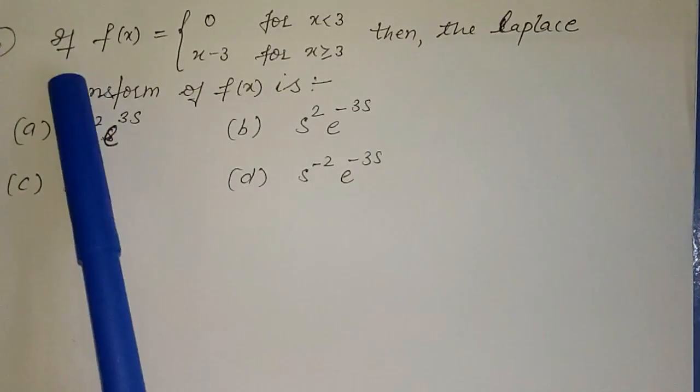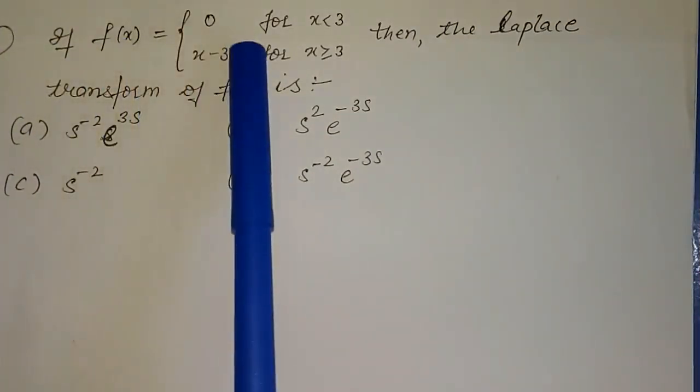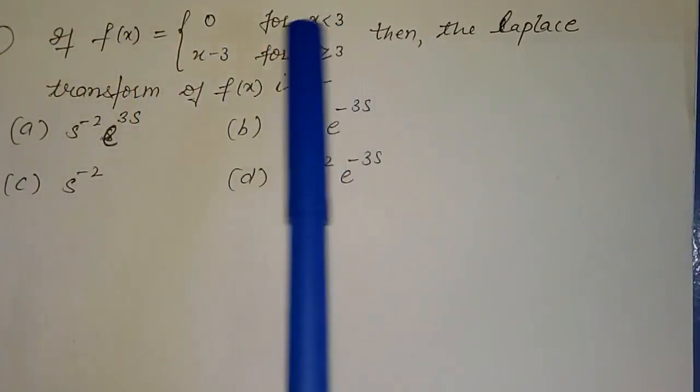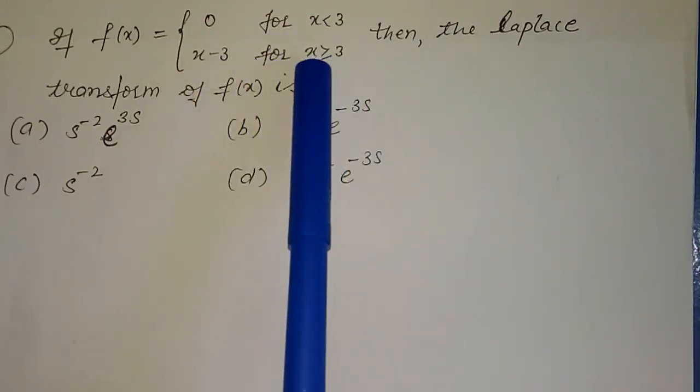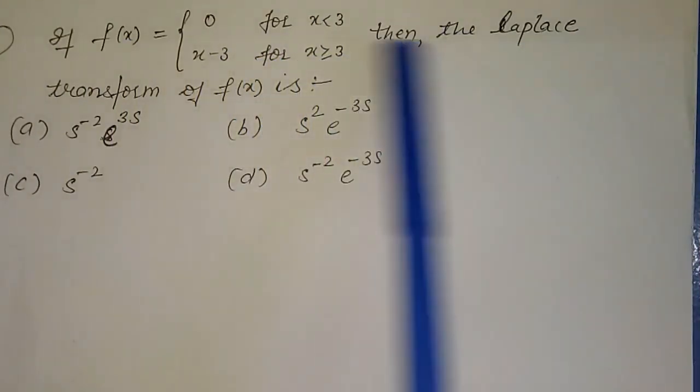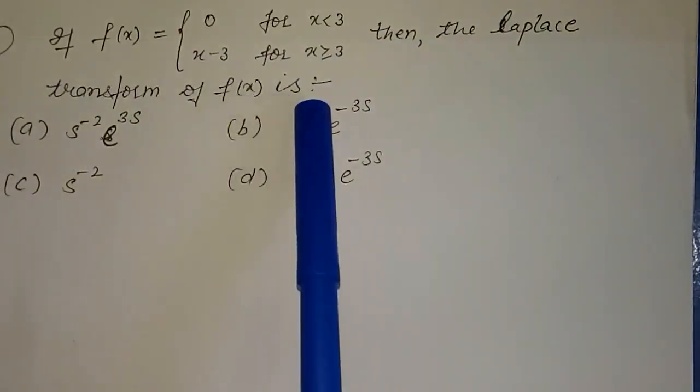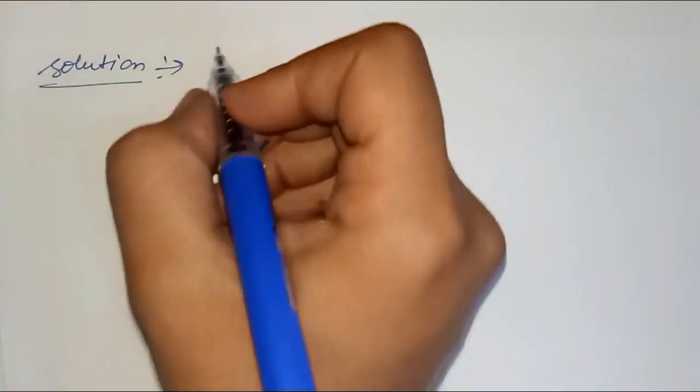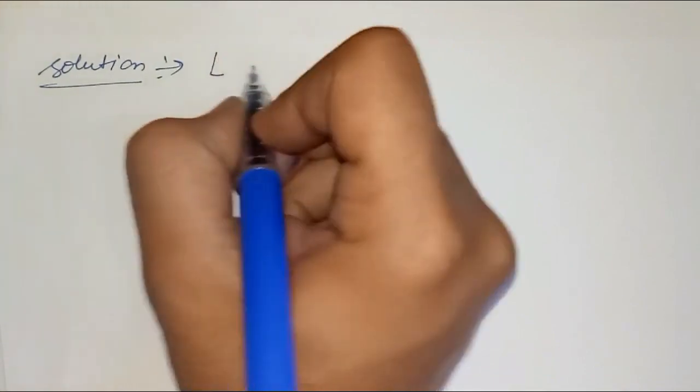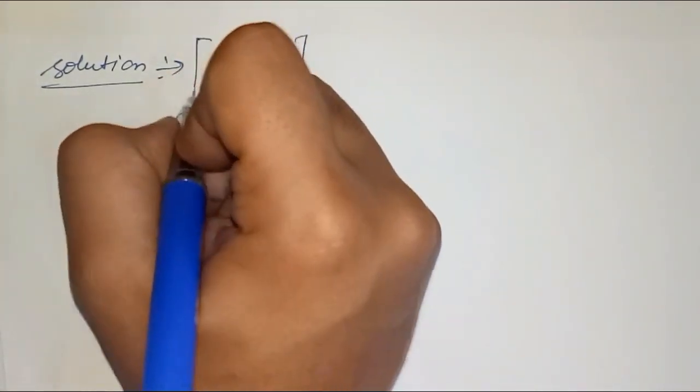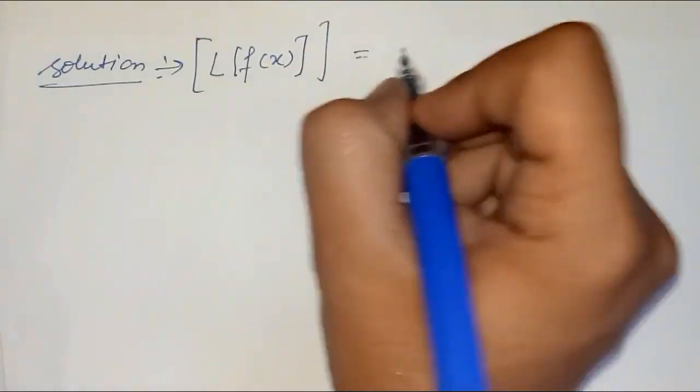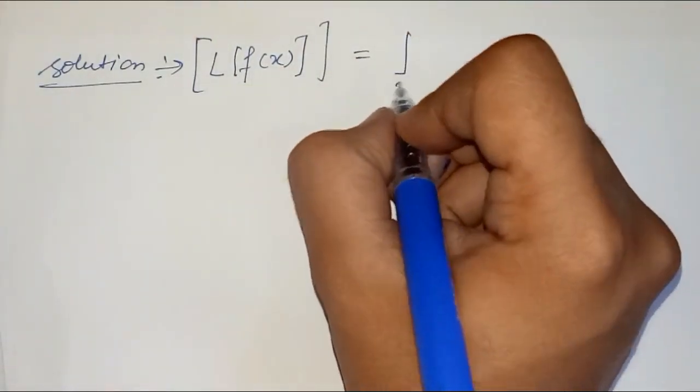The next question is: if f(x) equals 0 for x less than 3, or x minus 3 for x greater than or equal to 3, then what is the Laplace transformation of f(x)? The solution: Laplace transformation of f(x) equals integral from 3 to infinity of e^(-sx)(x-3) dx.